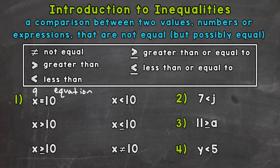For example, 11 would work, 50 would work, or 150 — anything greater than 10 would be a solution for x. Now, 10 would not be a solution because x has to be greater than 10. Is 10 greater than 10? No.